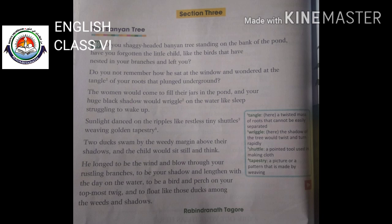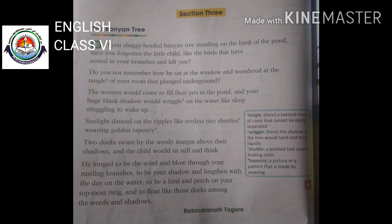The poem 'The Banyan Tree' is related to nature, named on behalf of a tree. In this poem, a speaker is asking the tree if it remembers a child that used to rest in its branches but has now left. The speaker asks if the tree remembers the woman coming to fill up their water jugs, the sunlight dancing on the water, and the animals playing as the child would sit and think. Here goes the first stanza: 'Oh you shaggy-headed banyan tree standing on the bank of the pond, have you forgotten the little child, like the birds that have nested in your branches and left you?'